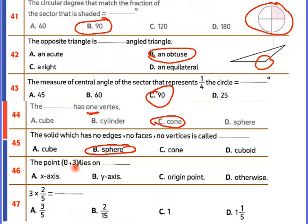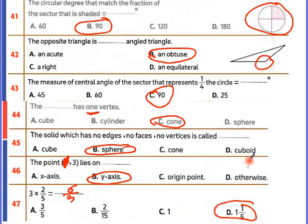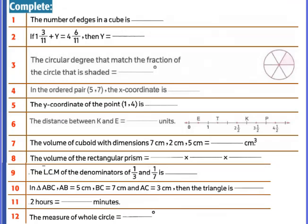The point (0, 3): when x is zero, it lies on the Y axis. When Y is zero, it lies on the X axis. The numerator times numerator gives 6 over 5, which equals 1 and 1 over 5 as a mixed number. The number of edges in a cube: 12 edges.